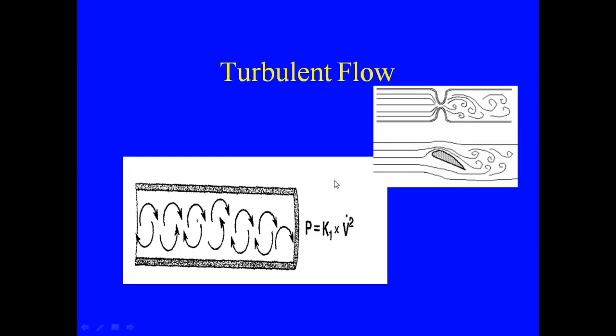So turbulent flow also varies with density of the substance, the roughness of the tube, the length, and the radius. However, with turbulent flow, if the flow is increased, we get a much larger increase in pressure generated from this turbulent flow. So when I think of turbulent flow, I think of a more irregular, higher speed flow.